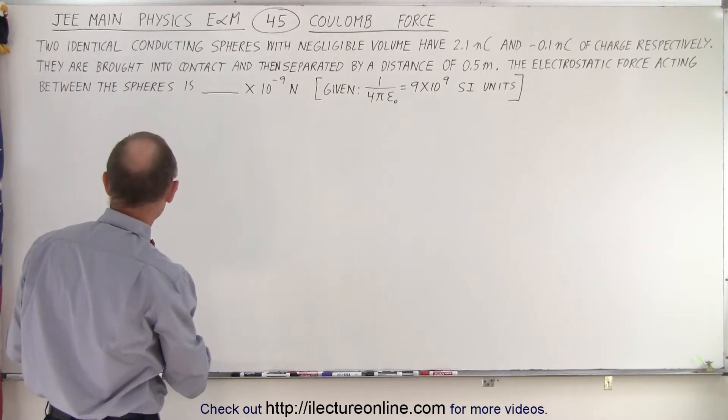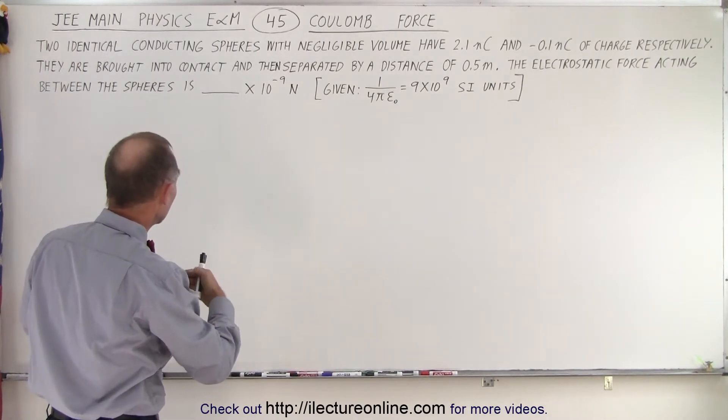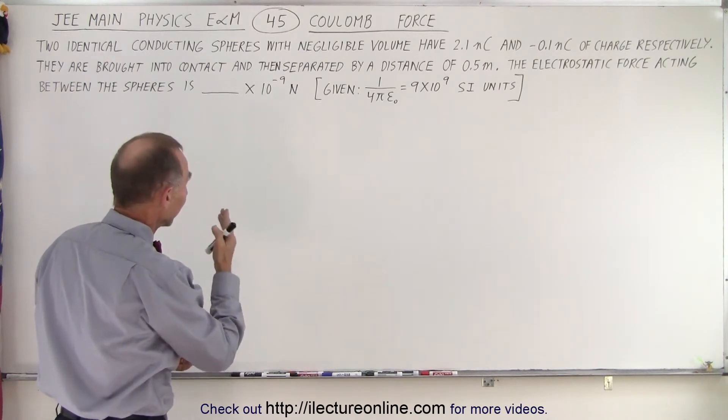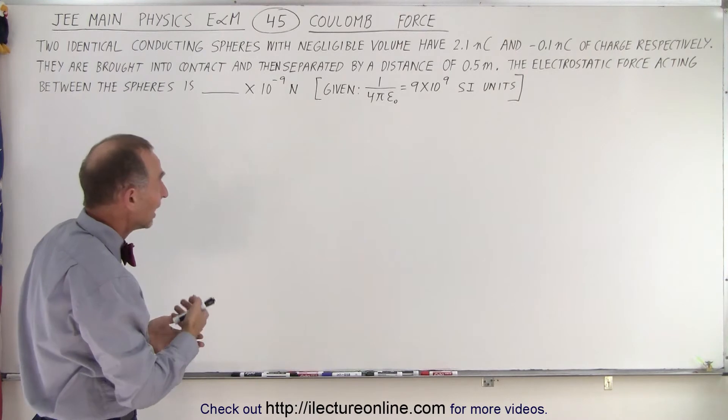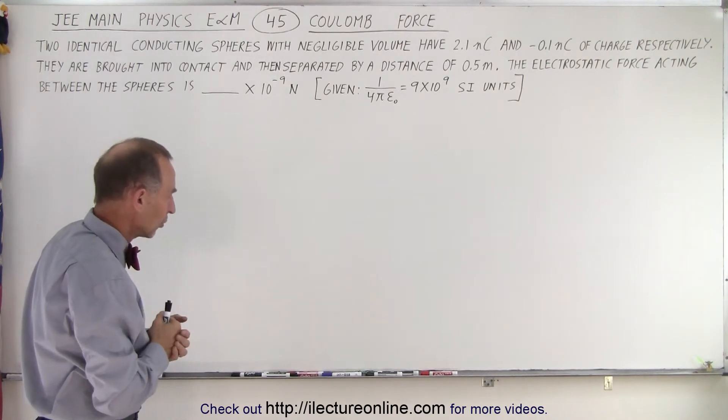The electrostatic force acting between the spheres is in terms of something times 10 to the minus 9 newtons, given that 1 over 4 pi epsilon sub not, which is the k constant, is 9 times 10 to the 9 SI units.